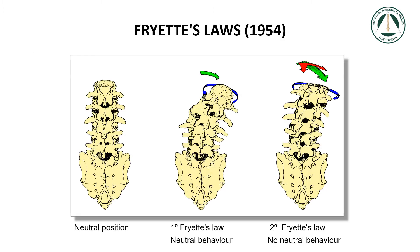The three principles of vertebral movement. Freyette described two vertebral behaviors: a movement set of type 1, the first law, where contralateral movements of side bending and rotation occur — that is, of opposite sides — and a movement called type 2, the second law, where ipsilateral movements of lateral bending and rotation occur on the same side.